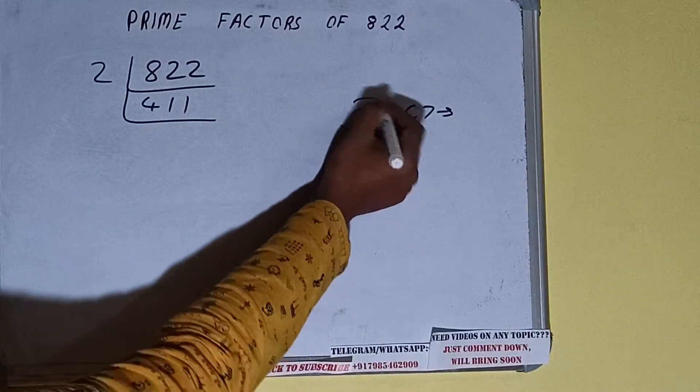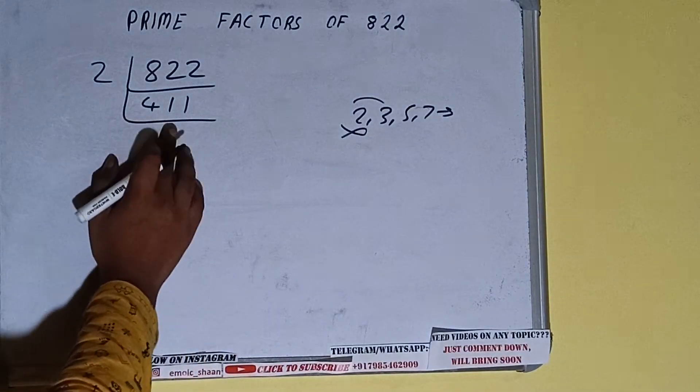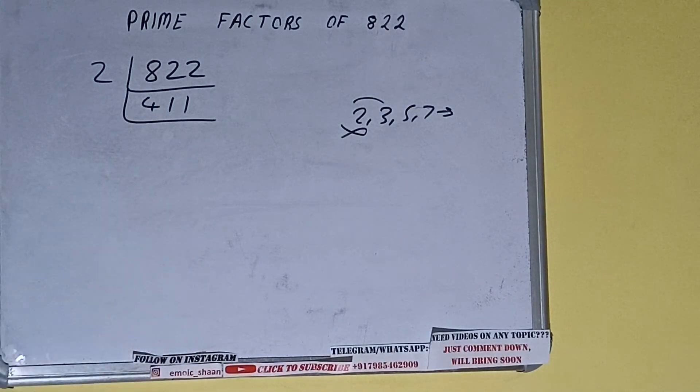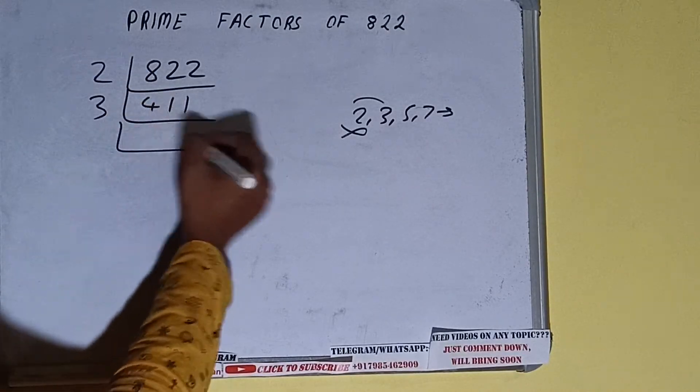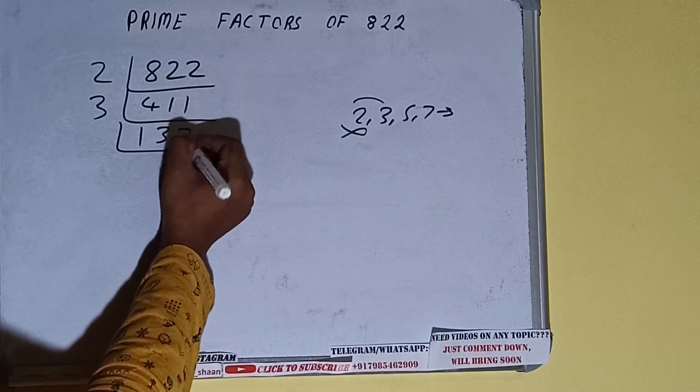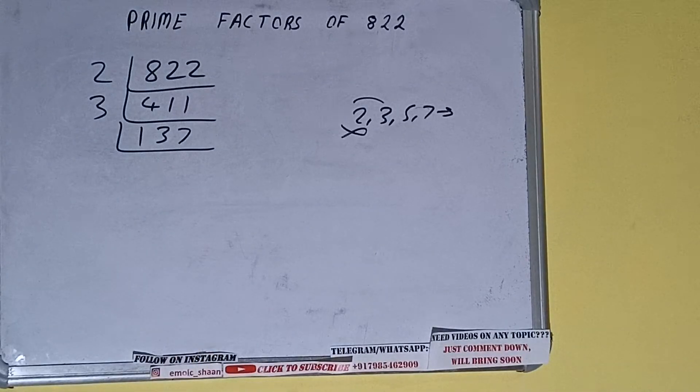the next lowest prime number, that is 3. Is 411 divisible by 3? Yes, it is divisible by 3. So divide it and we'll be having 137.